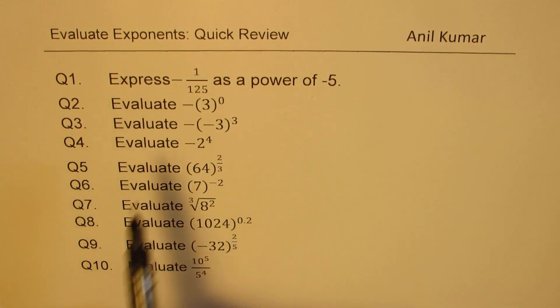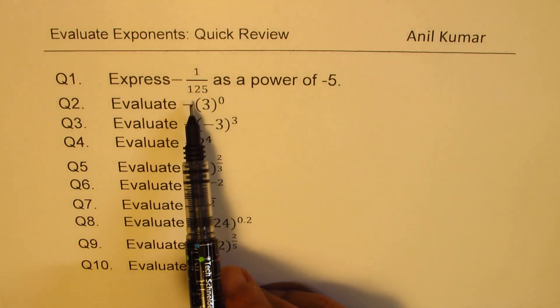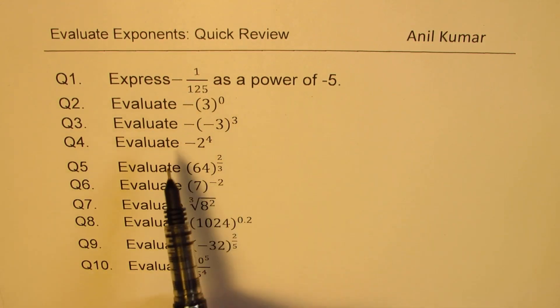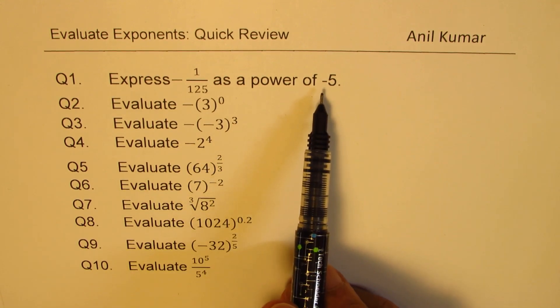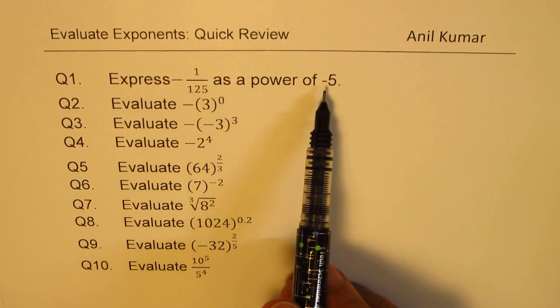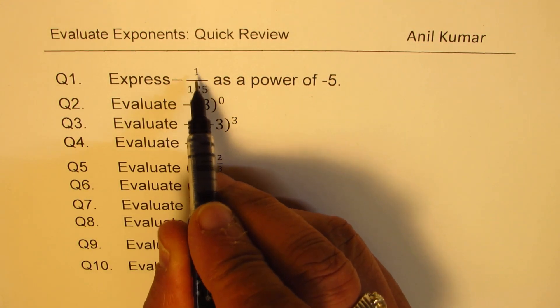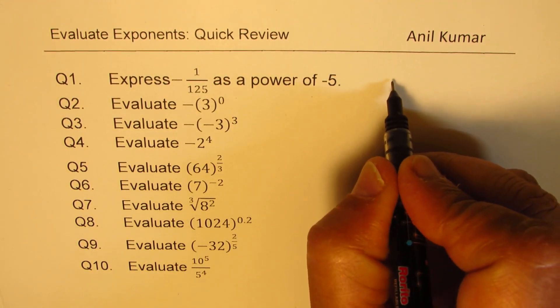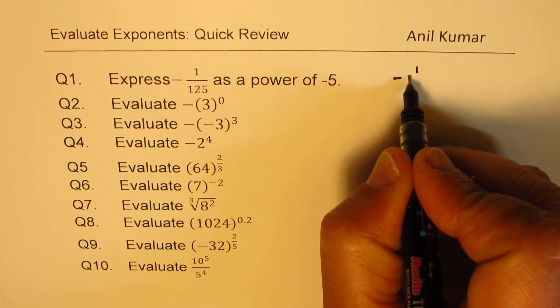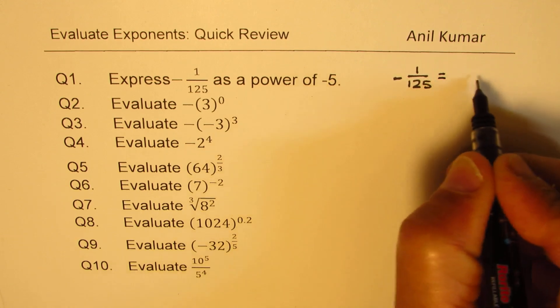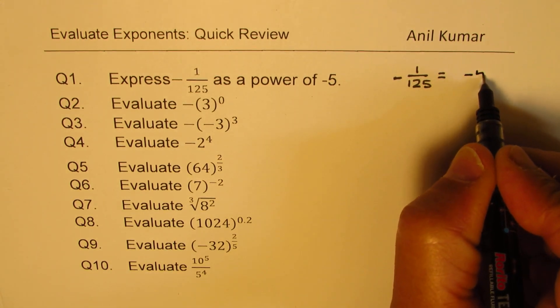Question number 1 is express minus 1 over 125 as a power of minus 5. It is important that you have to write this as a power of minus 5.